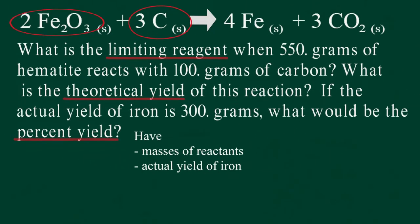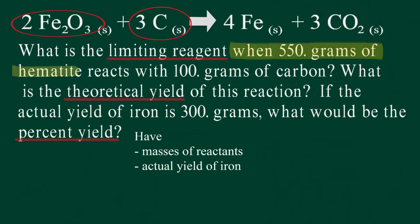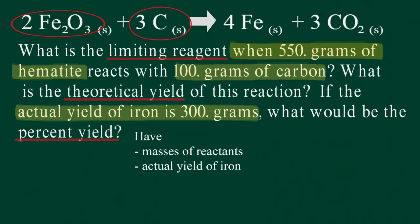We are given required pieces of information in the problem, such as the mass of hematite and the mass of carbon provided for the reaction, and the mass of iron actually produced from the reaction.